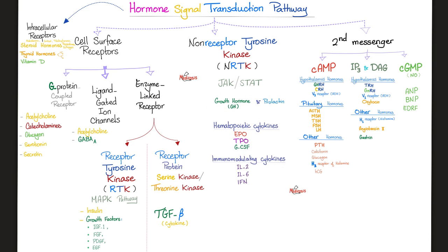Growth hormone and prolactin work via the JAK-STAT pathway, also known as the non-receptor tyrosine kinase. Insulin works by receptor tyrosine kinase. Glucagon and catecholamines like epinephrine, norepinephrine, and dopamine work by the G-protein coupled receptor system. Fat hormones have their receptors inside the cell because they can cross the membrane. For a more detailed discussion, check out my endocrinology playlist.